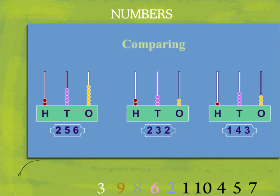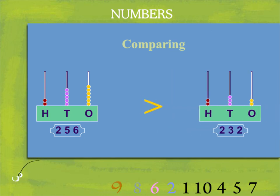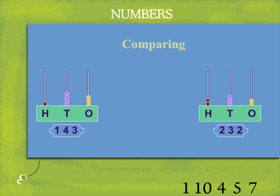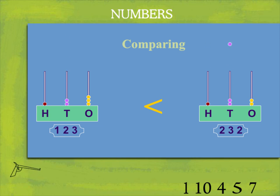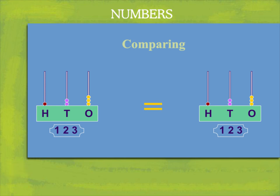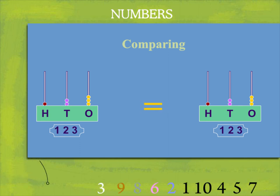Let's compare the numbers. Two hundred and fifty six is greater than two hundred and thirty two, and one hundred and forty three is less than two hundred and thirty two. Let's change these numbers. The first now is one hundred and twenty three and the second is also one hundred and twenty three. We put an equal to sign now and say one hundred and twenty three is equal to one hundred and twenty three.